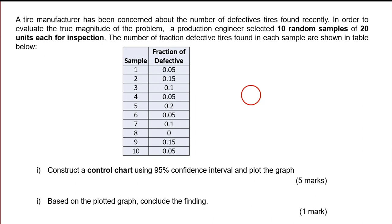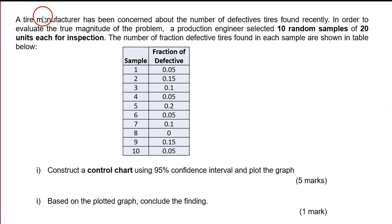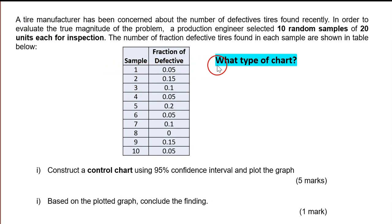Let's look at the third question. They give a sample of 10 samples. Look at the unit — do they have any? It's about a tire manufacturer, and they talk about defects. A production engineer selected 10 random samples of 20 units each, so every sample has 20 units. The number of fraction defective is shown in the table. We need to construct a control chart using 95% confident interval, and based on the graph, conclude the finding.